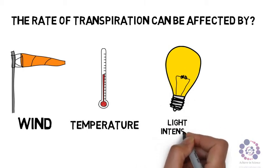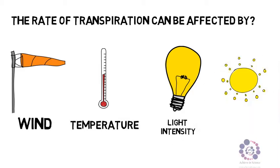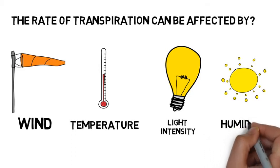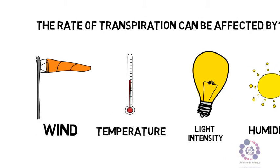The light intensity can also affect the rate of transpiration. The greater the light intensity, the greater the transpiration. And also the humidity can also affect the rate of transpiration.